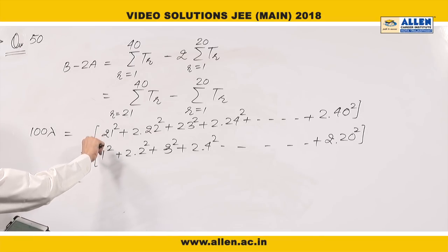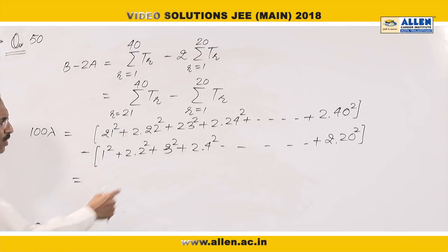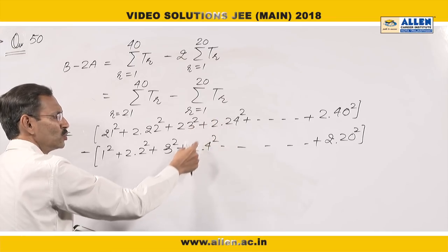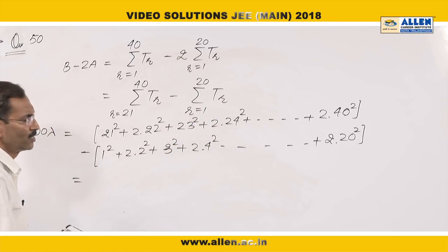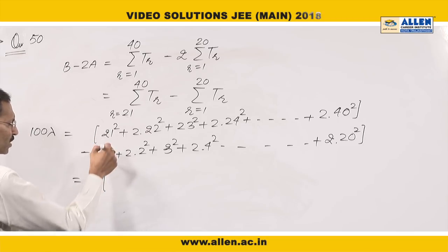This gives us 20 into 22. We will take 2 common, then it is 20 into 24, 20 into 26, 2 into 20 into 28 and so on. So I will take 20 common. In this pair, I will have 22.